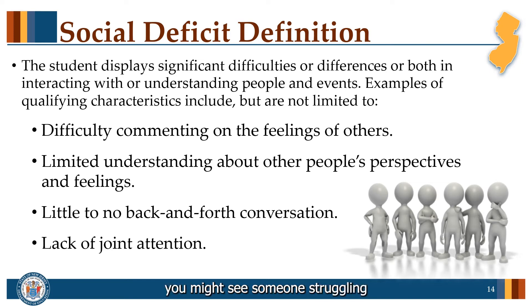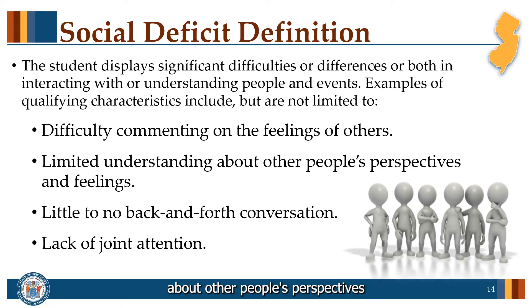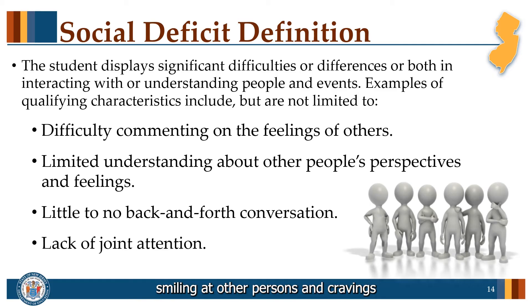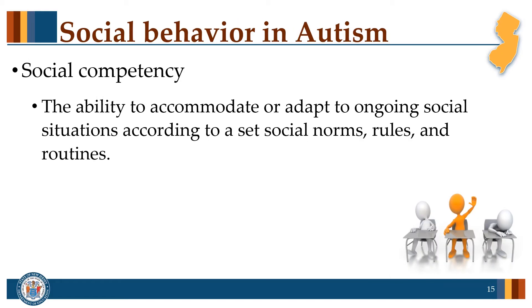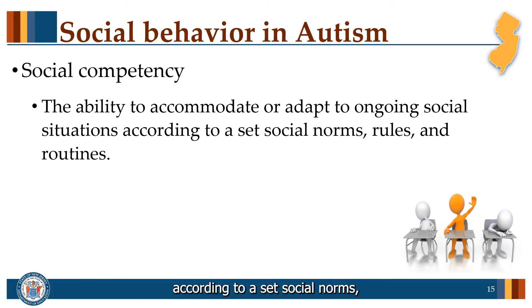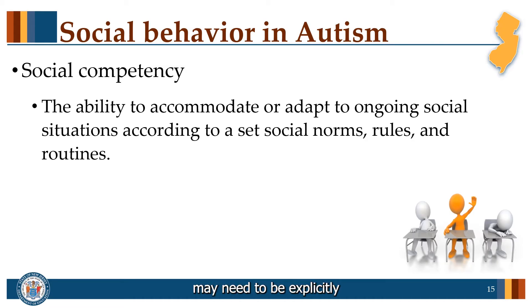In the social area, you might see someone struggling with commenting on the feelings of others or having a limited understanding of other people's perspectives and feelings. There could be little to no conversational skills and a lack of joint attention — for example, eye contact, smiling at others in greetings, and responding when their name is called. Students with autism can struggle with social competency, which is the ability to accommodate or adapt to ongoing social situations according to social norms, rules, and routines. While many of us learn this through watching others and past experiences, students with autism may need to be explicitly taught the expectations for different social situations.